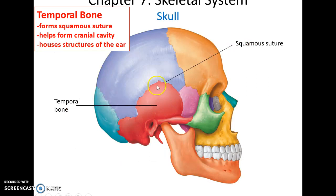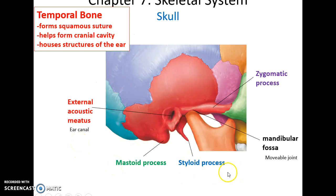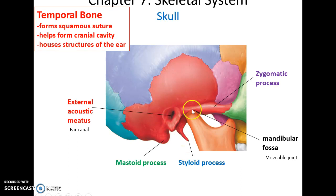The temporal bones are lateral bones that help form the squamous suture. They also help form the lateral sides and floor of the cranial cavity and house the inner structures of the ear. Special structures of the temporal bone include the external acoustic meatus, which forms the ear canal; the mastoid process; the styloid process; the mandibular fossa, which helps form the only movable joint in the skull; and the zygomatic process, which connects to the zygomatic bone.